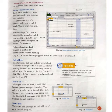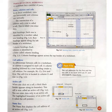The intersection of a row and a column is called a cell. This one box is called a cell.